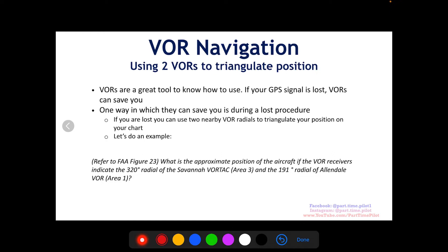When you dial in Savannah on nav radio 1, and Allendale on nav radio 2, and then you center the needle — for Savannah, it centers on 320, and when you center it for Allendale, it centers on 191. So how do you find your position with that information? Let's go to the chart and show you how.